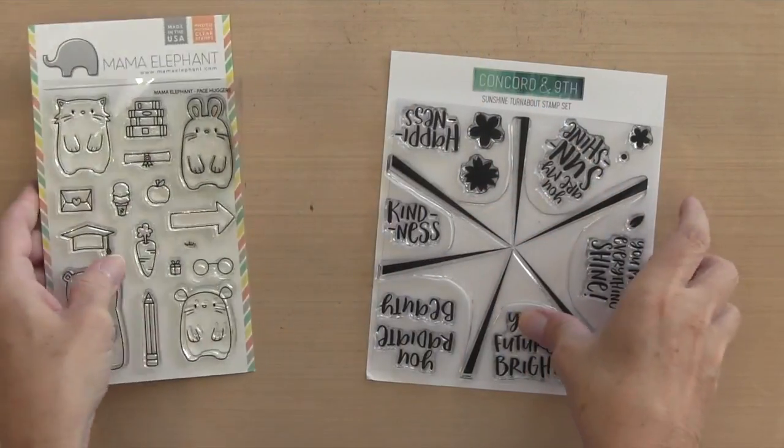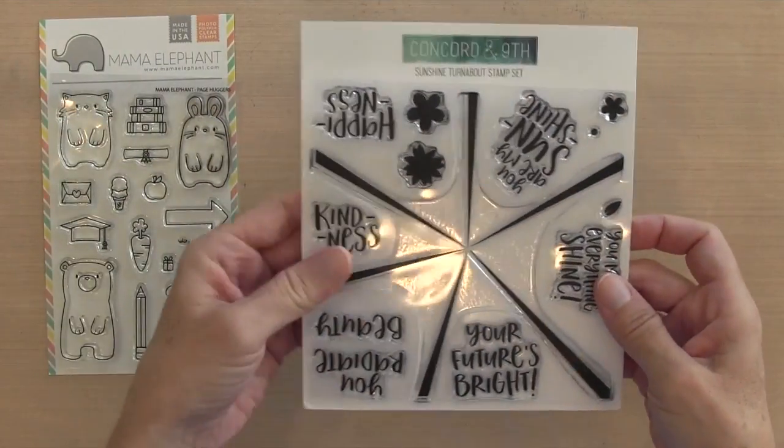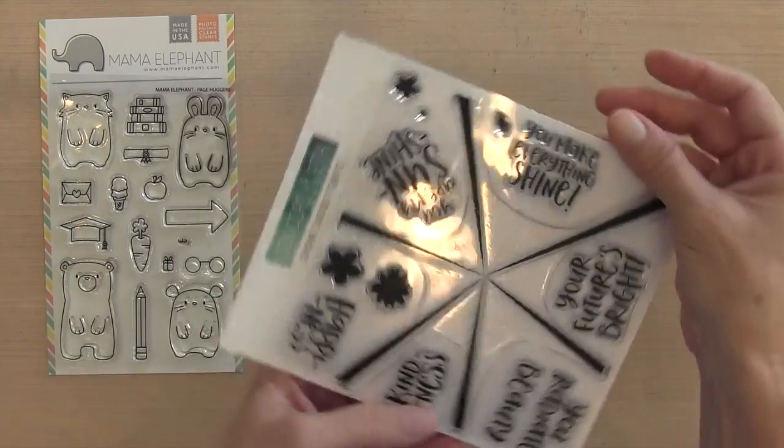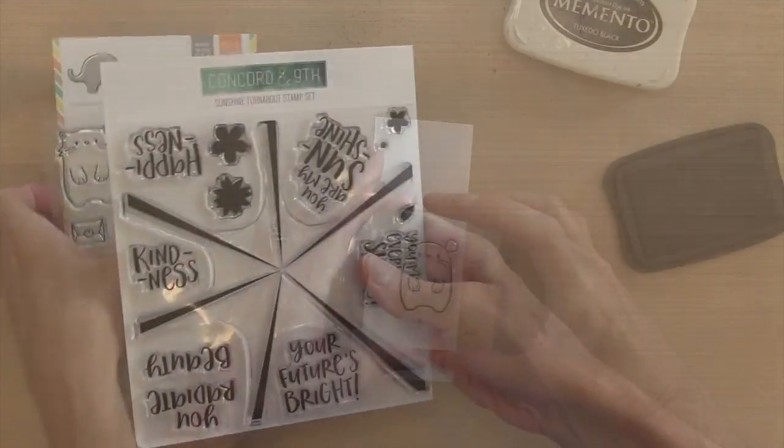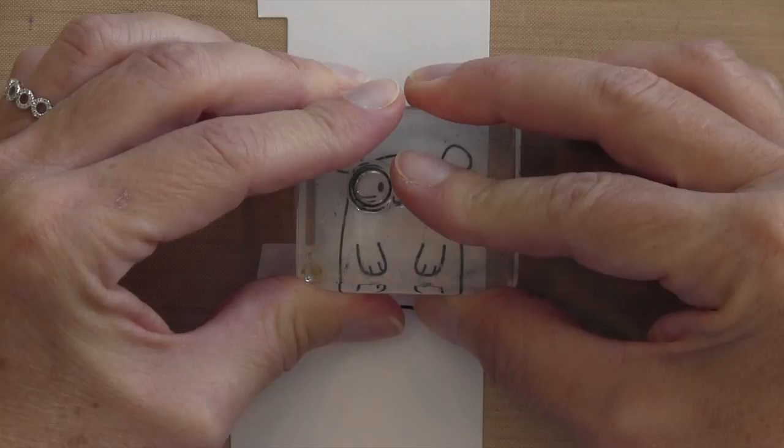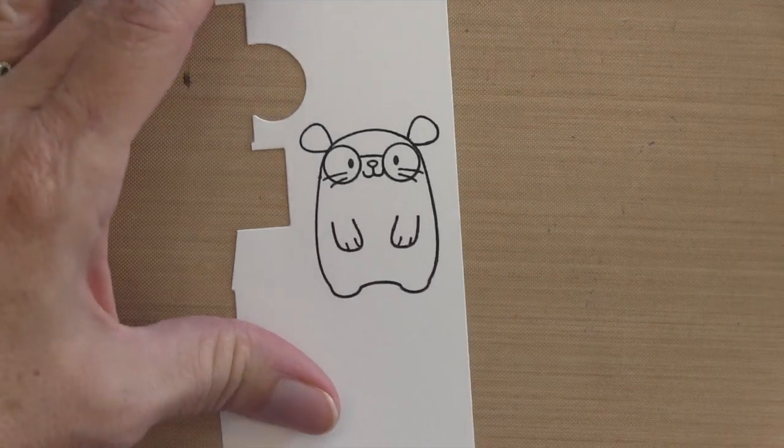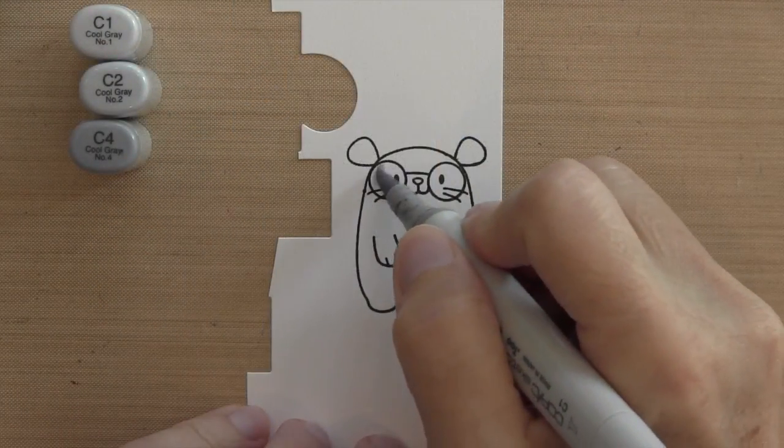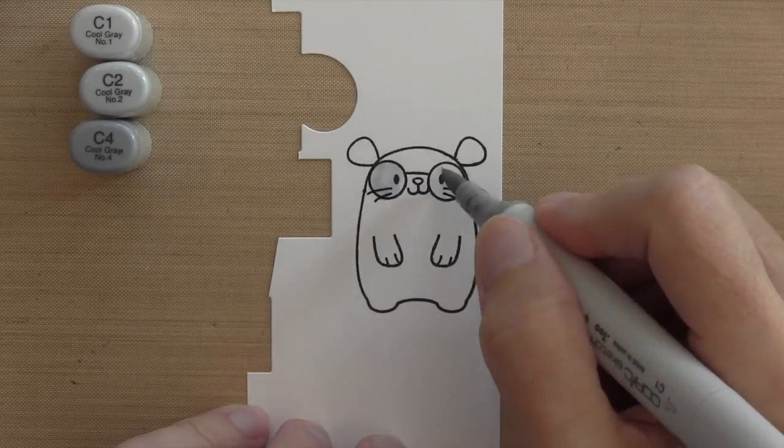I'm using the mouse along with the glasses and the smiley face. And then I'm using my new turnabout stamp called Sunshine. So I'm going to stamp my mouse in some Memento Tuxedo Black ink on Neenah cardstock. And I'm going to stamp the mouth and the eyeglasses also. And I'm going to just quickly color him with some Copic markers.